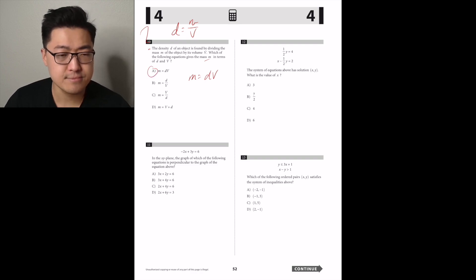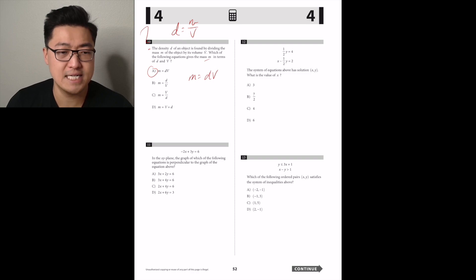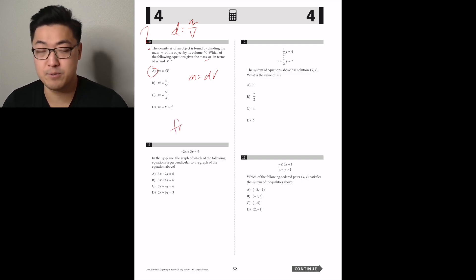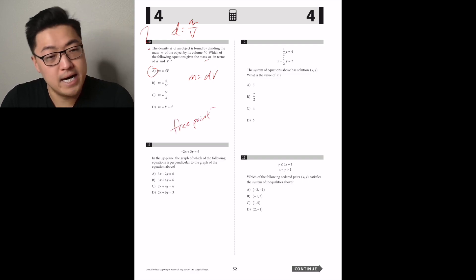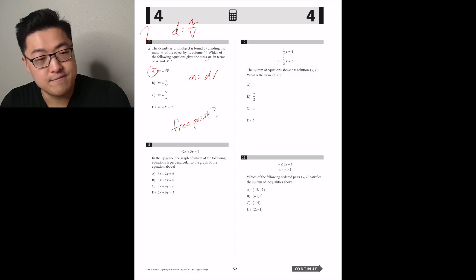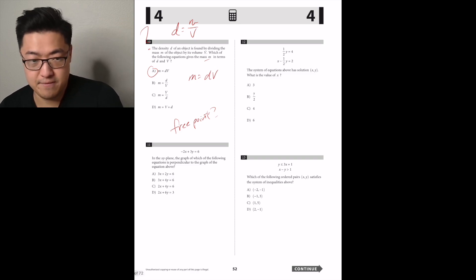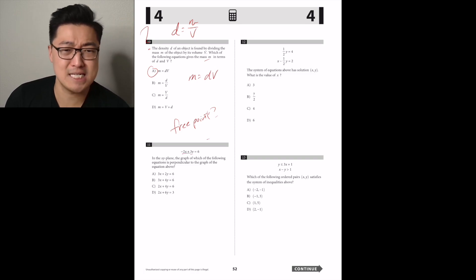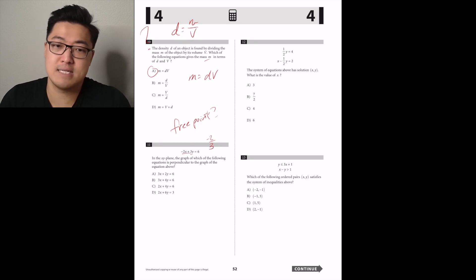In the xy-plane, the graph of which equation is perpendicular to the graph of the equation shown? Perpendicular means opposite reciprocal slope. The ratio of x to y in this one is negative two-thirds, so the perpendicular slope should be three-halves. Answer A — easy.